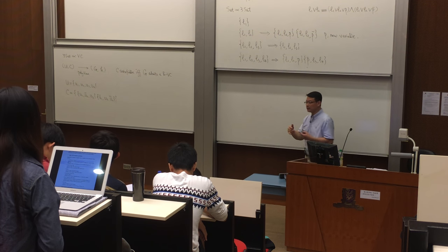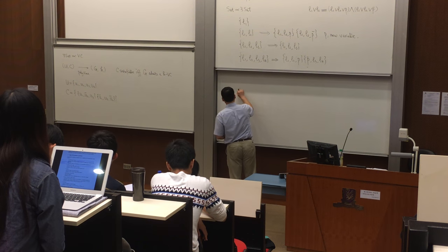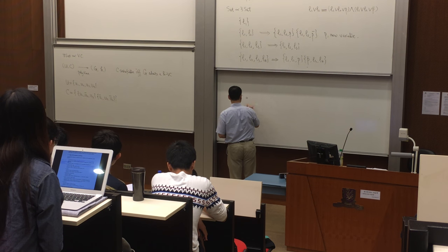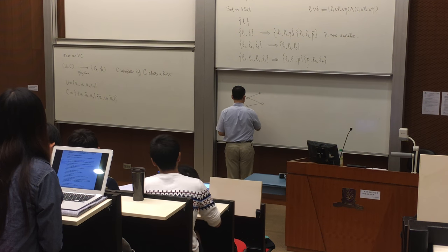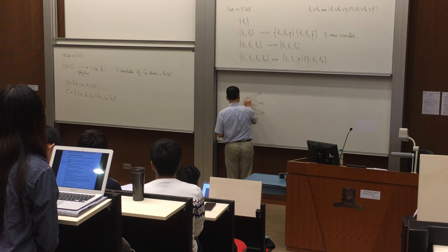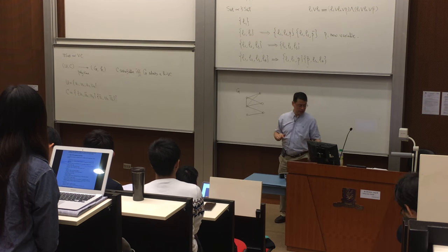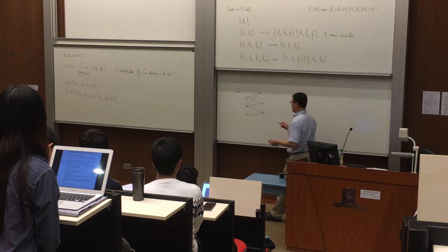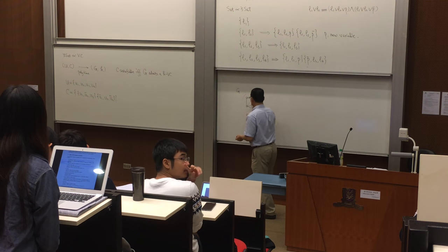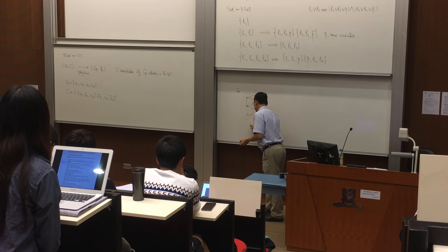We have seen this a couple of times already. So give me a graph G. This is graph G. So here I have a vertex cover — this is a vertex cover.